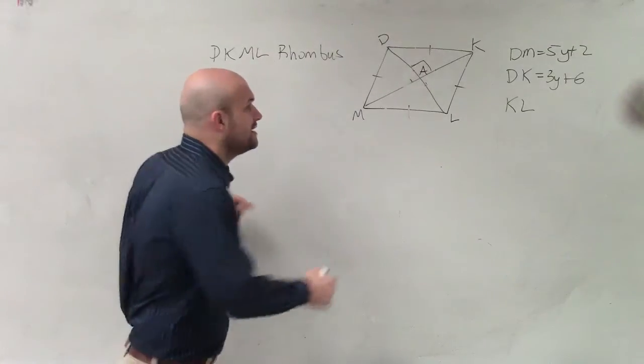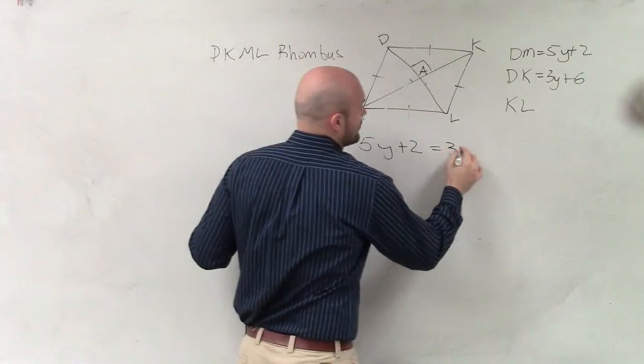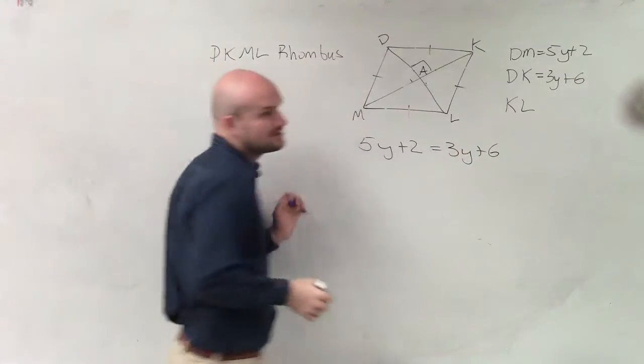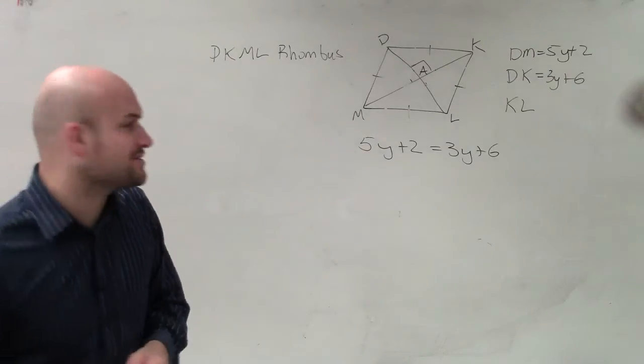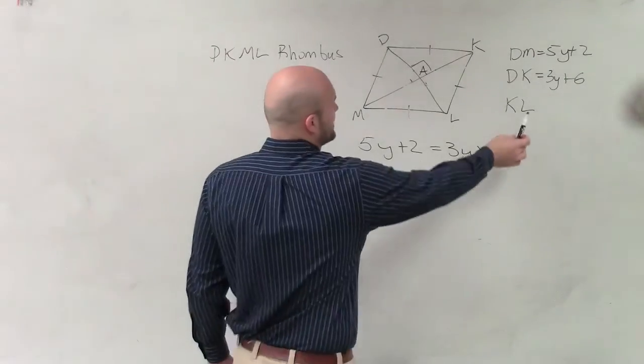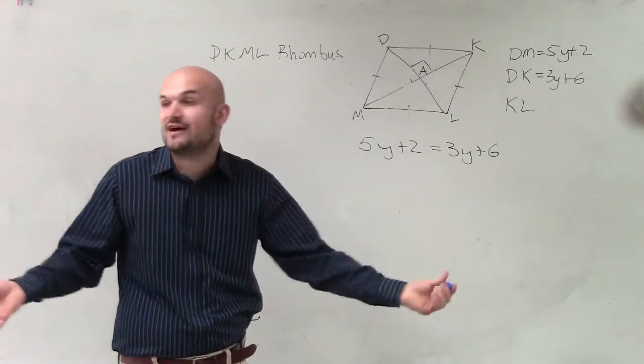So therefore, I can write an equation, 5y plus 2 is equal to 3y plus 6, right? And now I can find the measure of y, because what they're asking us is find the length of KL, which is going to be the length of all of them. We just need to find the measure of y.